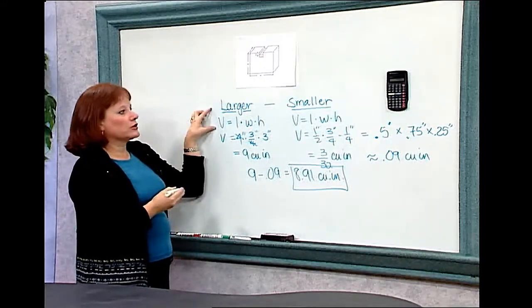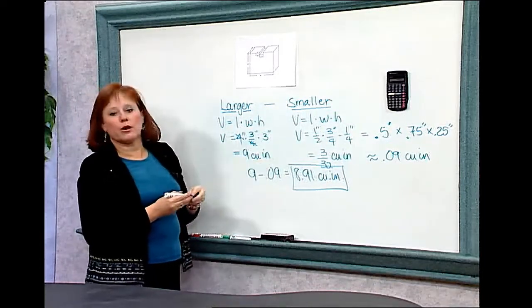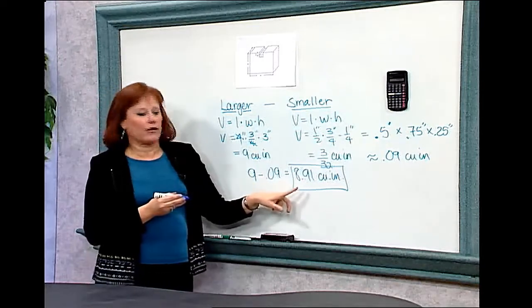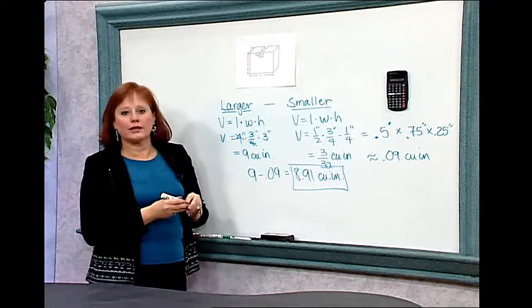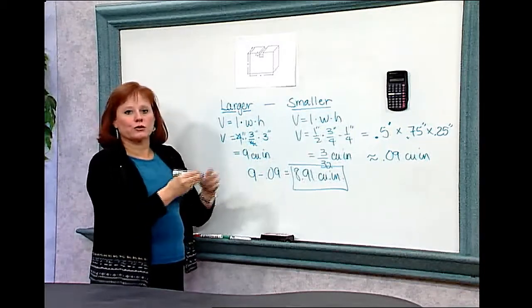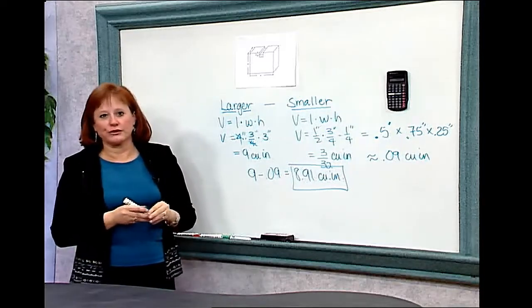I found the volume of the larger to be 9 cubic inches and the smaller to be about 0.09 cubic inches. And when I subtracted, I found the resulting volume to be 8.91 cubic inches. Once again, you know the strategies for each one of these steps. Your problem solving skills will help you to put the steps together to come up with a satisfactory solution.